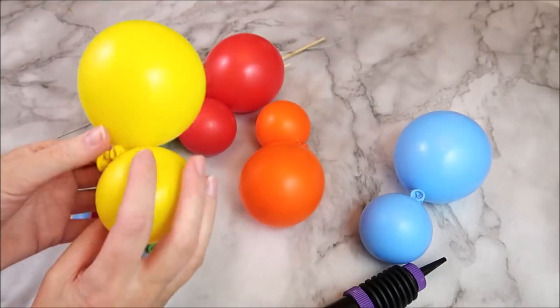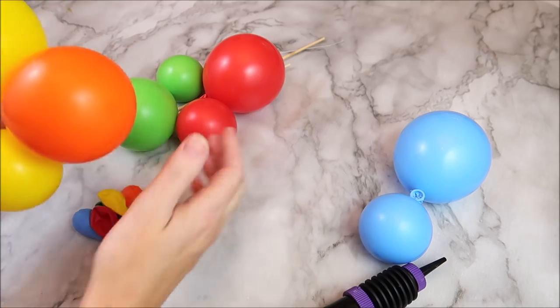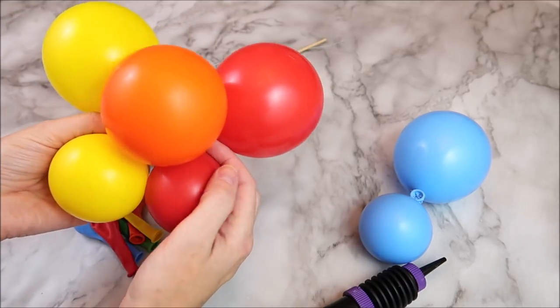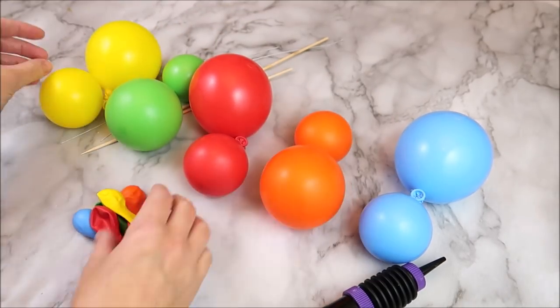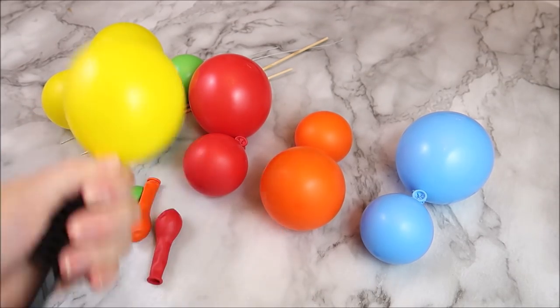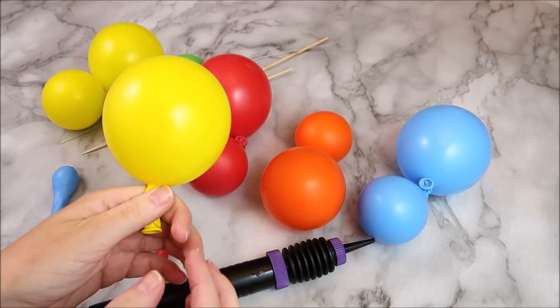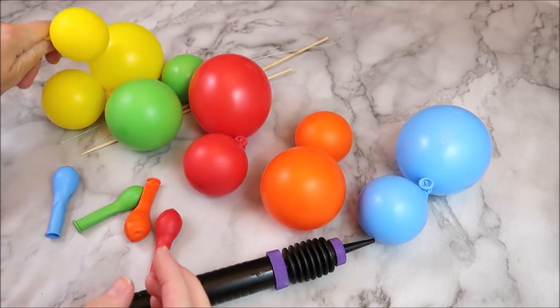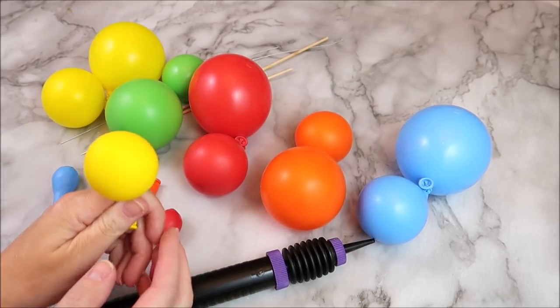And once you've got all your balloons tied together, place them beside each other so you can get a rough idea what your garland is going to look like. The reason why that's important is this is where I realized I needed a third little balloon and even smaller, a baby balloon. So I blew up the rest of my balloons and tied those into the same clusters as well.